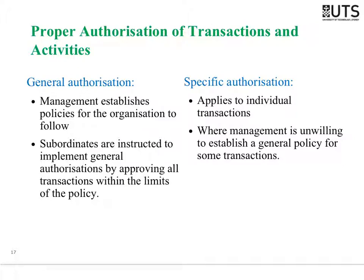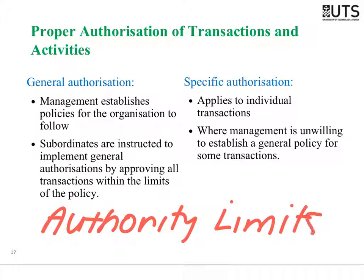The second category is proper authorization, specifically authority limits. A junior might authorise purchases up to $1,000; a manager up to $10,000; a director up to $50,000; anything above goes to the CFO. The intention is to ensure individuals only operate within their given authority. You could also call these approval limits.